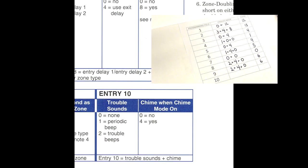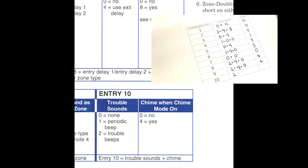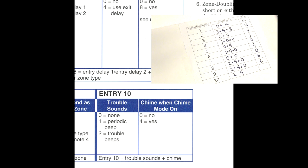Let's move to the final field, field ten. Trouble sounds — when we have a trouble in the system we want trouble beeps, which is two. And finally, chime when chime mode is on — there's no reason you wouldn't want it to chime if you have chime mode on, so enter in a four. Two plus four gives us a total of six for field ten. And that's it — you navigated through this very confusing chart.